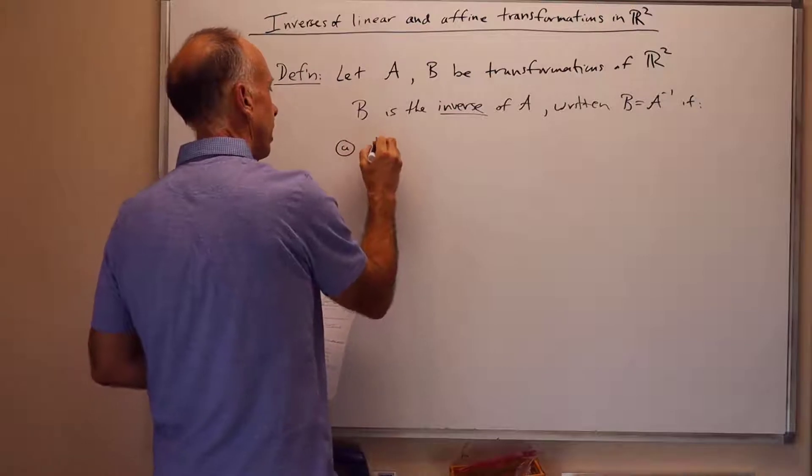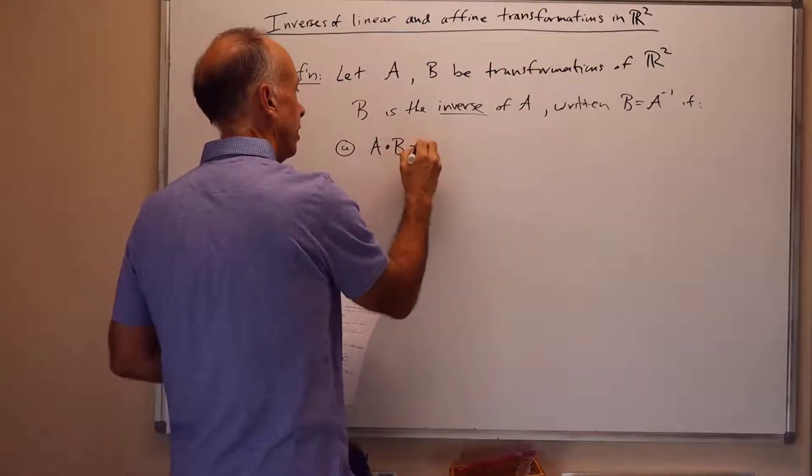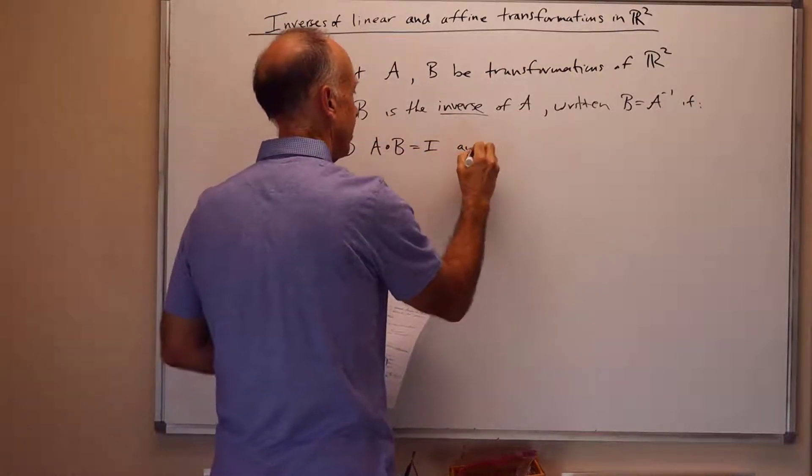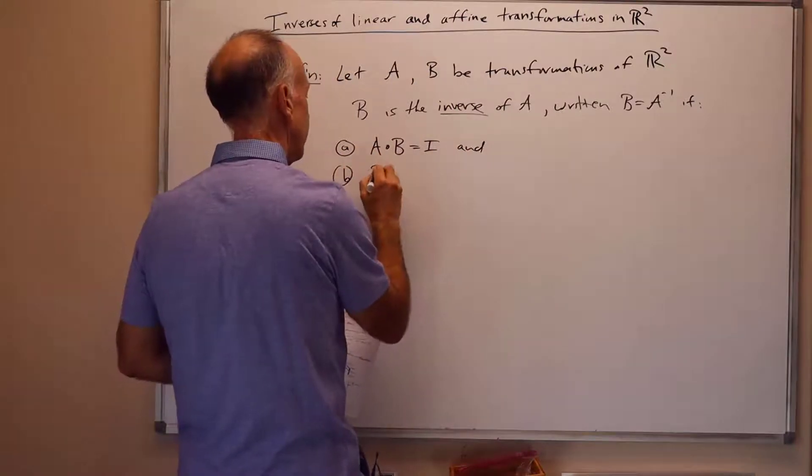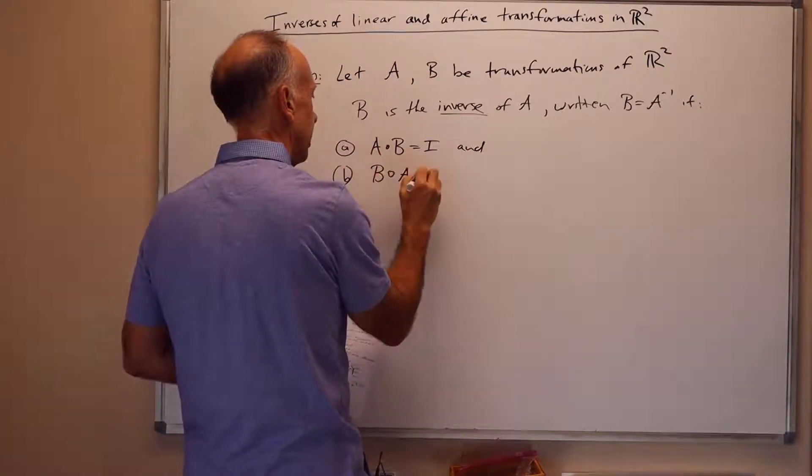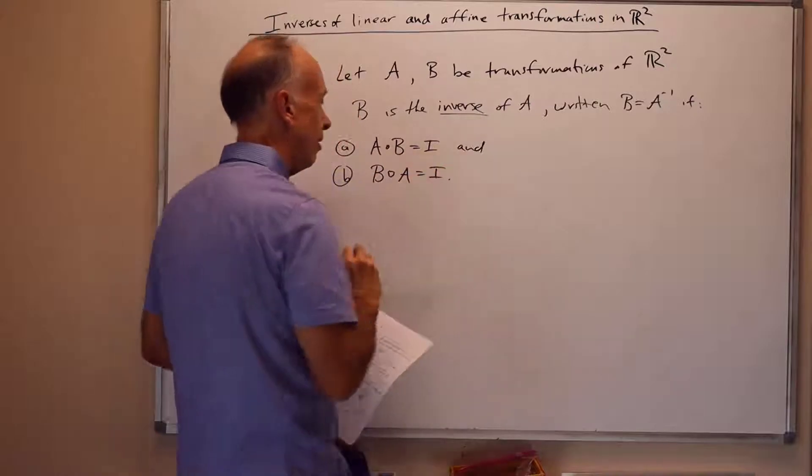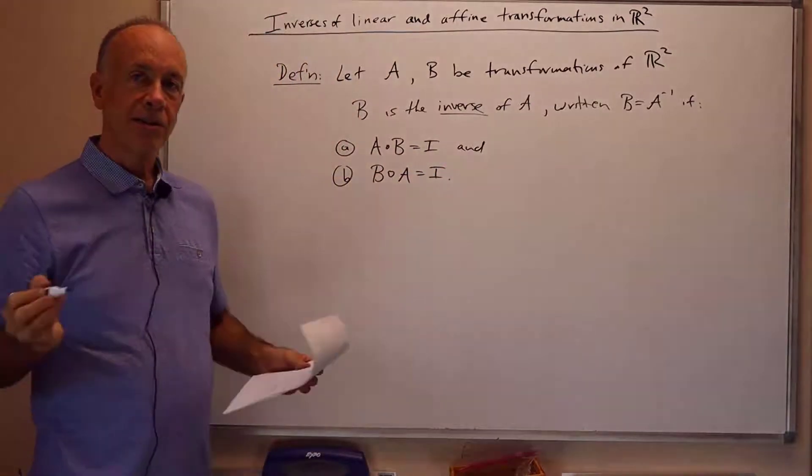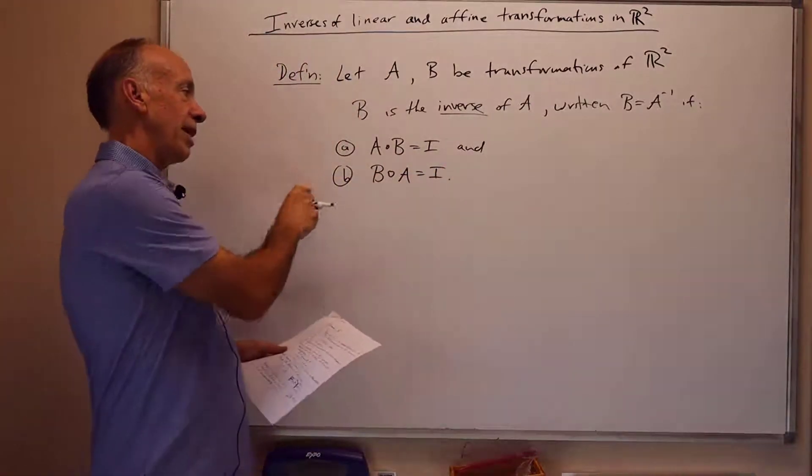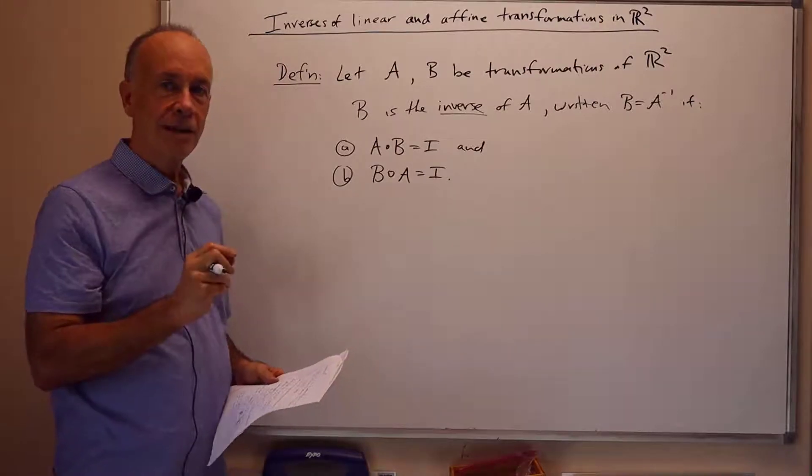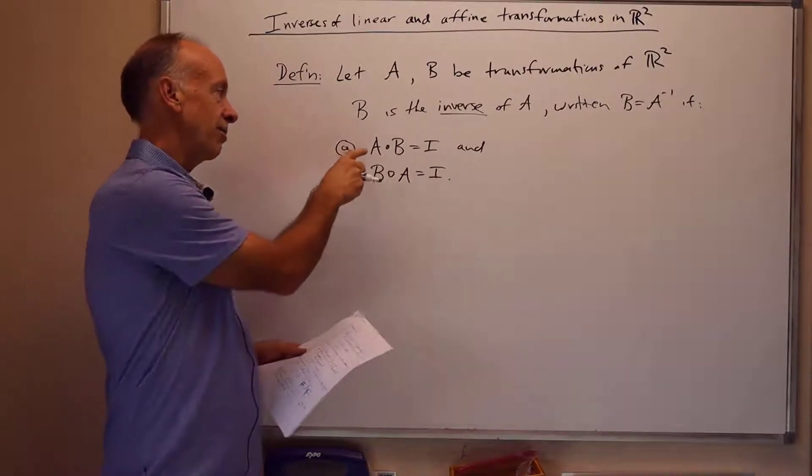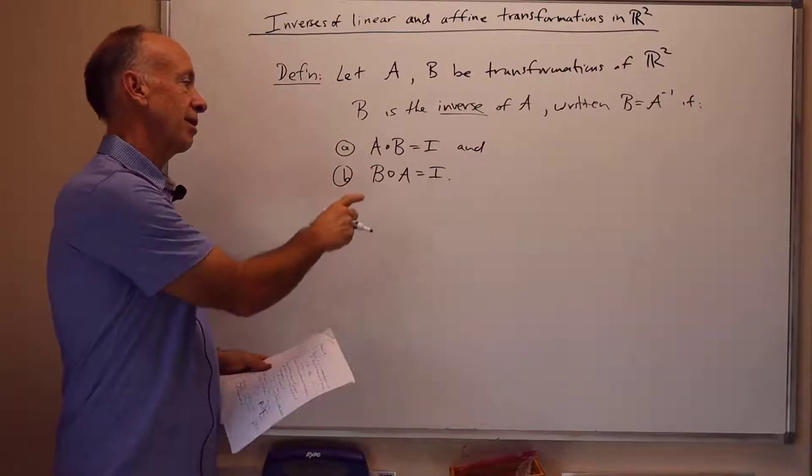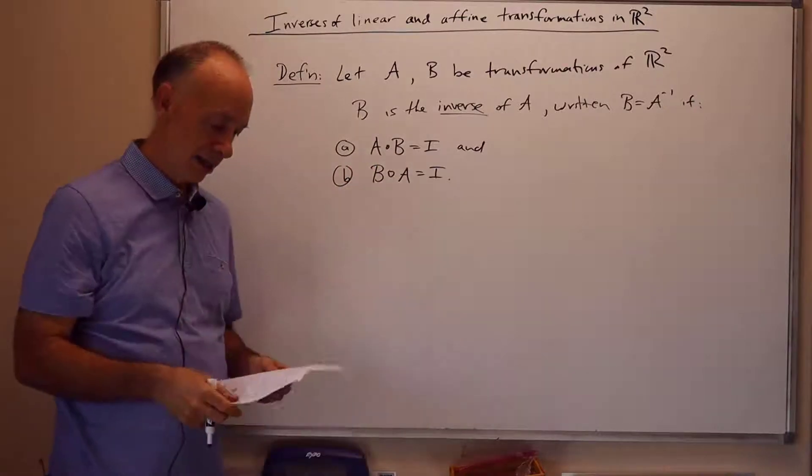One, if we take A composed with B, we get the identity. And two, B composed with A is the identity. Now, we're in a finite dimensional space, R2, so actually conditions A and B are equivalent. If the transformation A composed of transformation B is the identity, then also B composed of A is the identity.